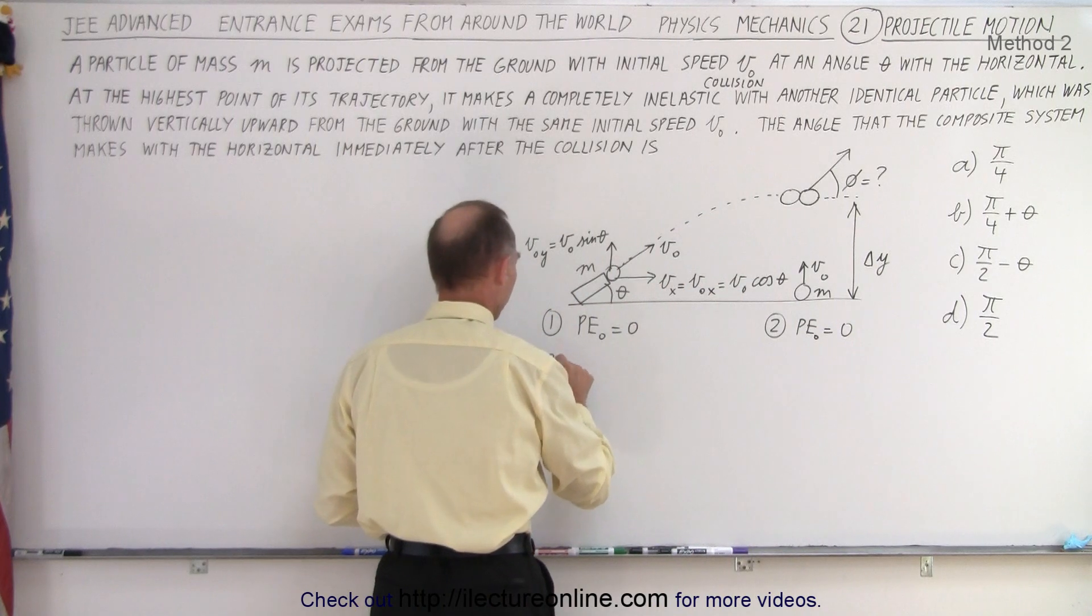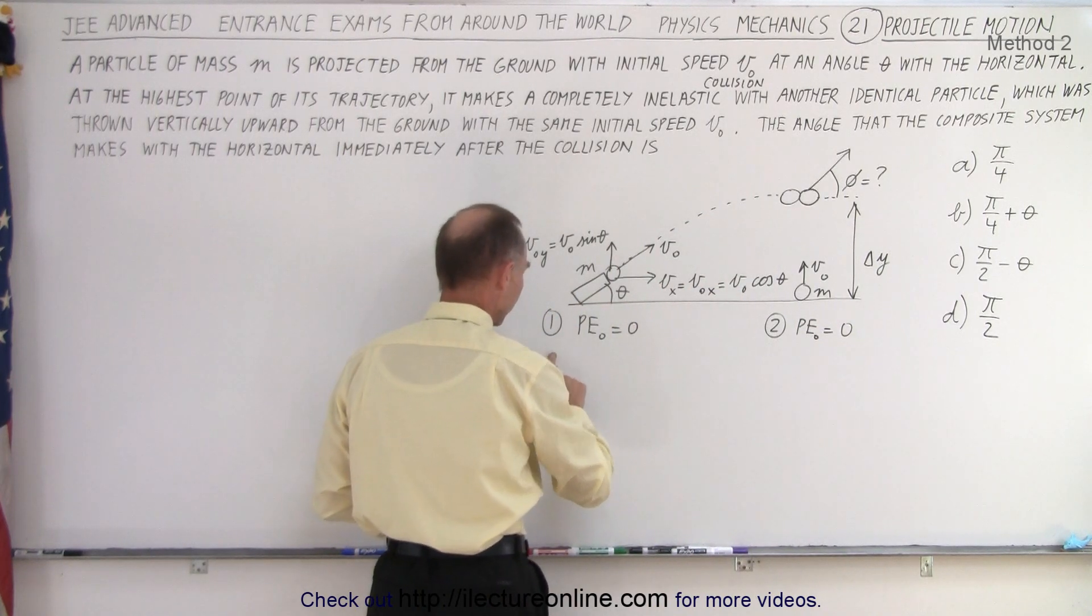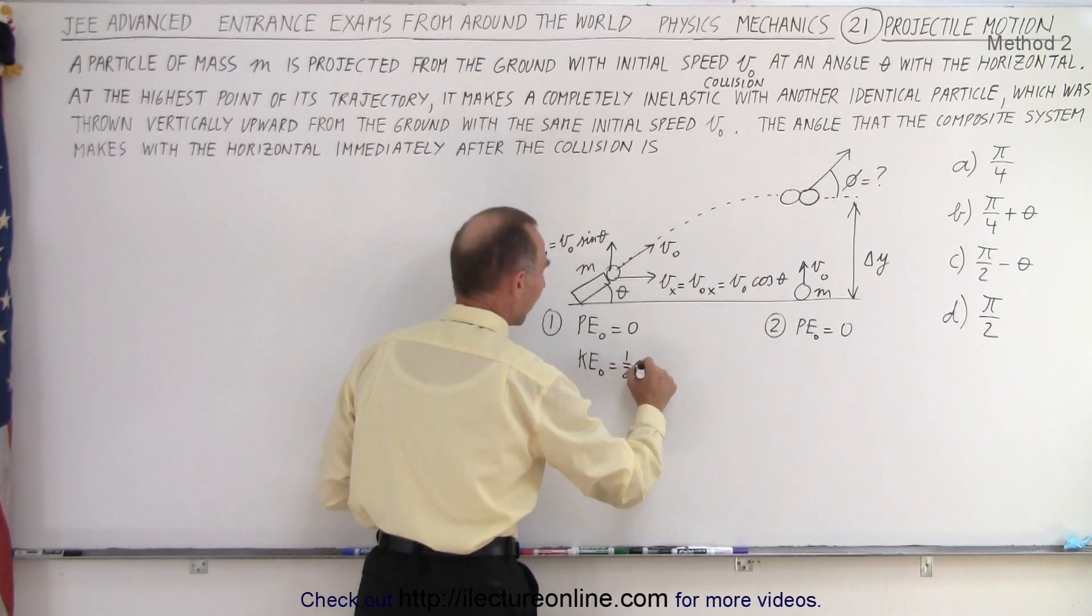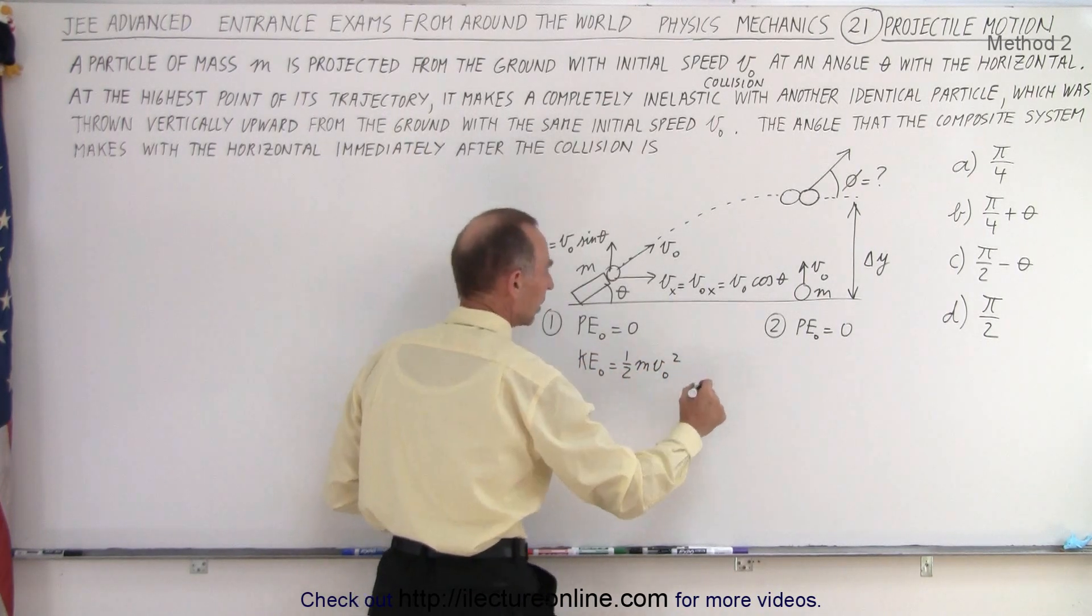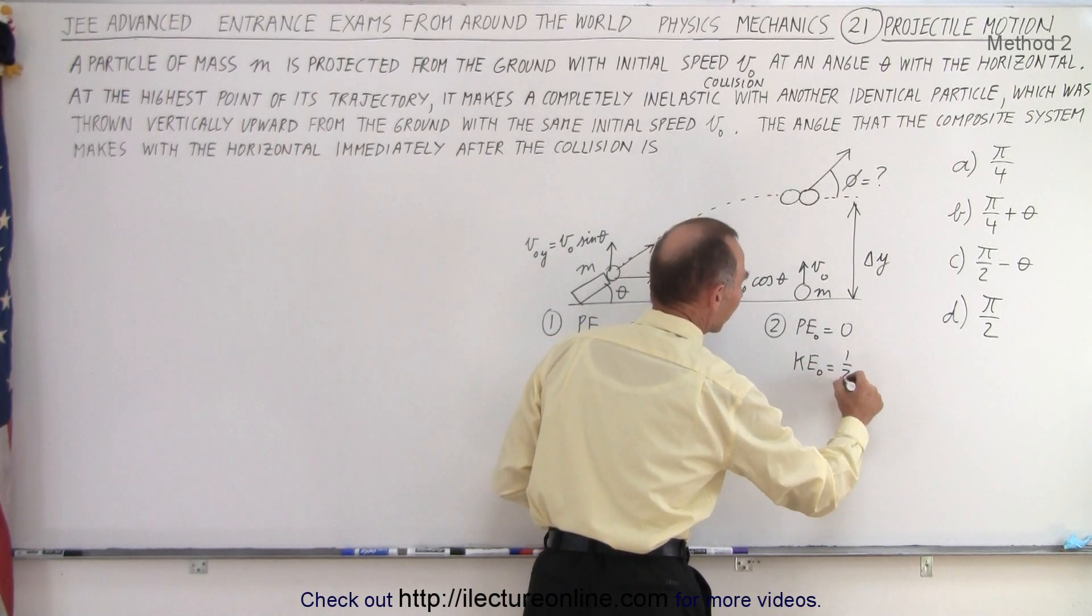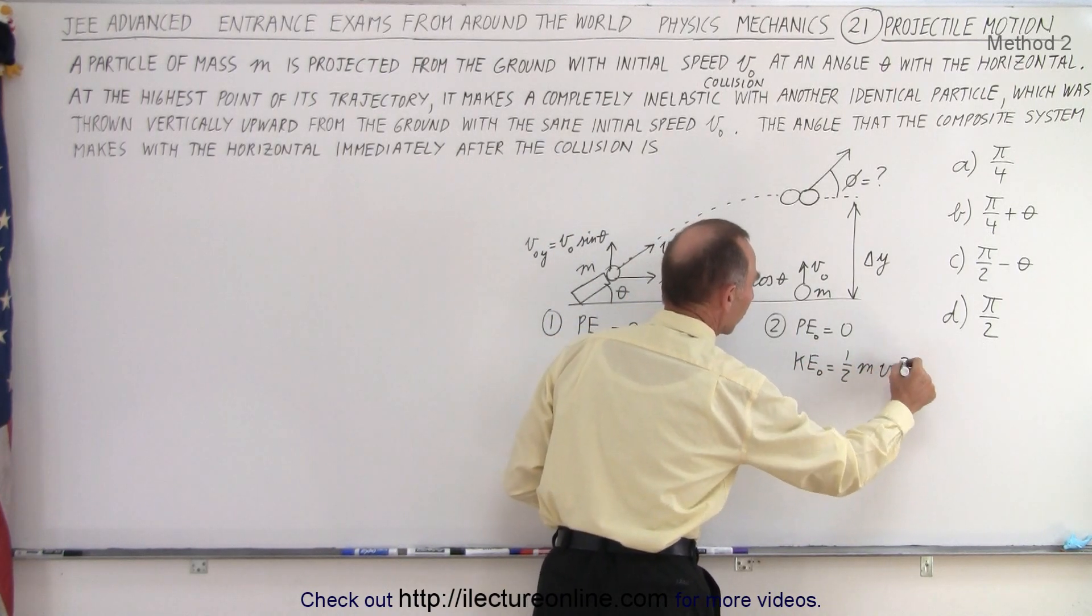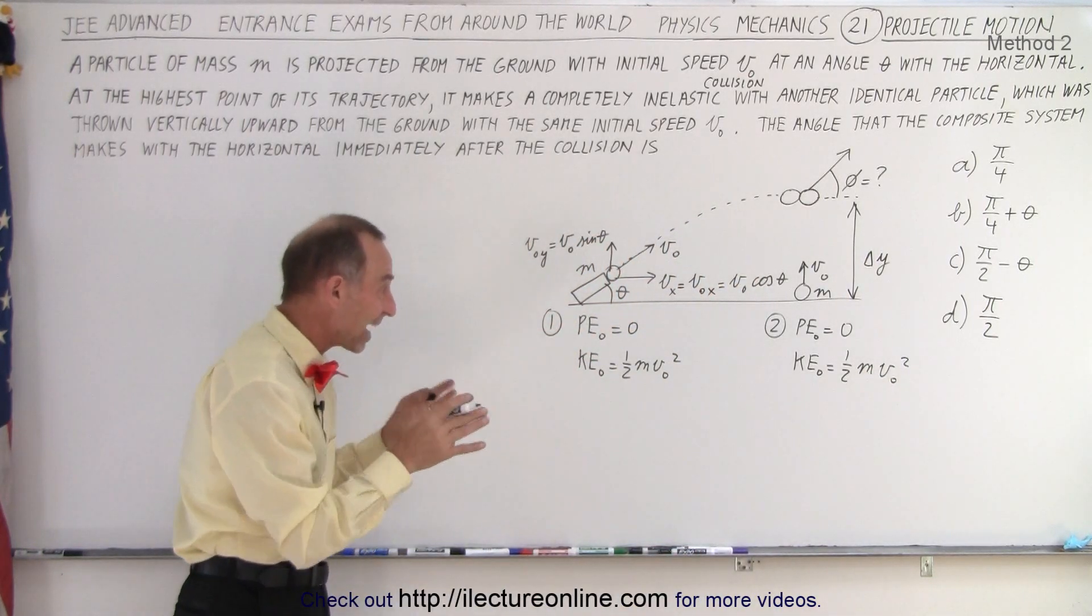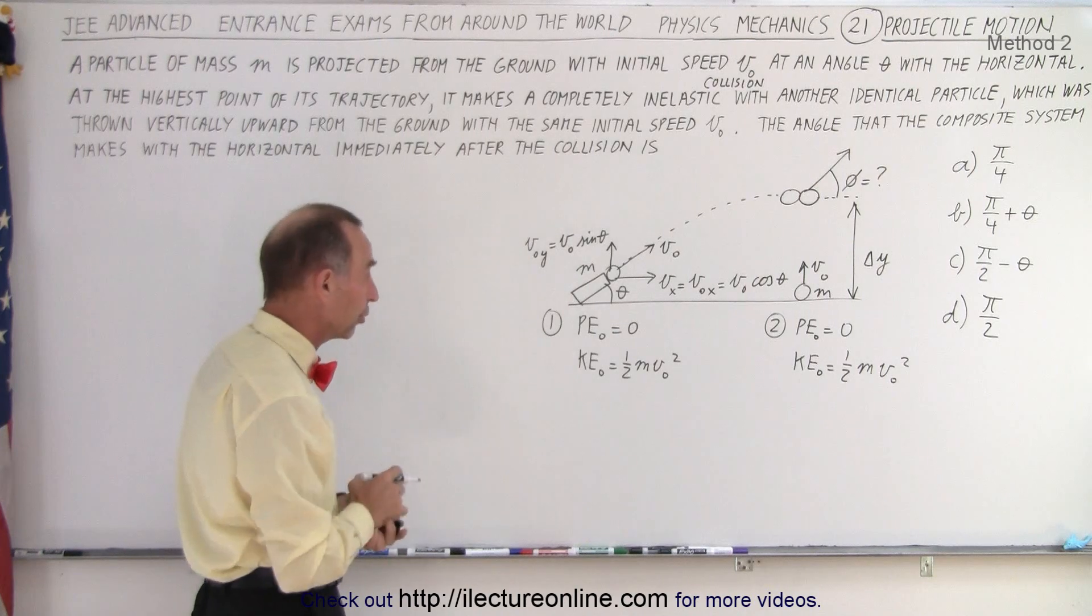And for particle number one, the kinetic energy initial is equal to one half m v initial squared. And here the kinetic energy initial will be equal to one half m v initial squared. In other words, the energy of particle one initially is exactly equal to the energy of particle two.